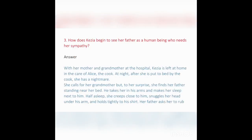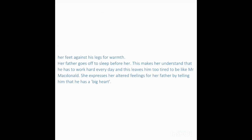Question: How does Kezia begin to see her father as a human being who needs her sympathy? Answer: As her mother and grandmother were at the hospital, Kezia was left at home with Alice the cook. At night she had a nightmare and called for her grandmother, but found her father standing near her bed. He took her in his arms and made her sleep next to him. She snuggled close, held tightly to his shirt, and he told her to rub her feet against his legs for warmth. He fell asleep before her, and she realized he worked very hard every day, leaving him too tired to play like Mr. Macdonald. She told him he had a big heart, expressing her altered feelings of love and understanding.